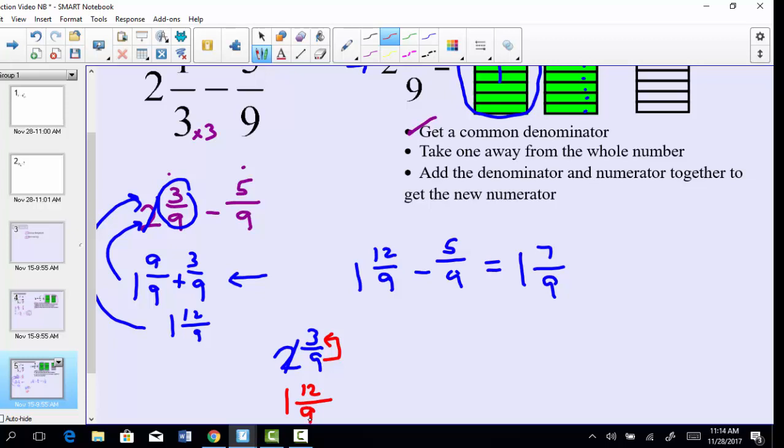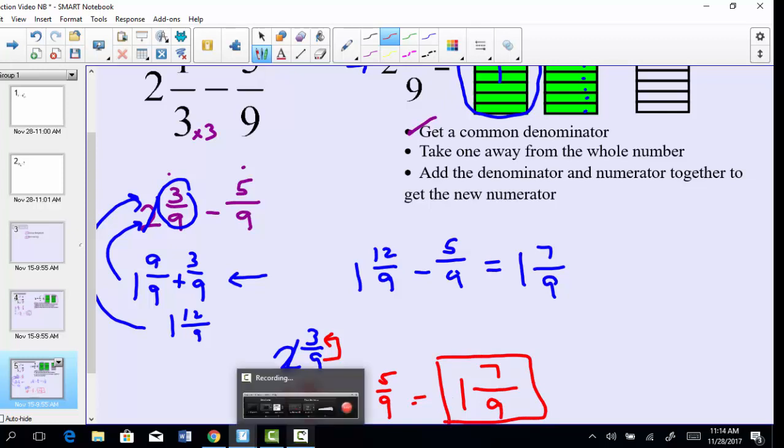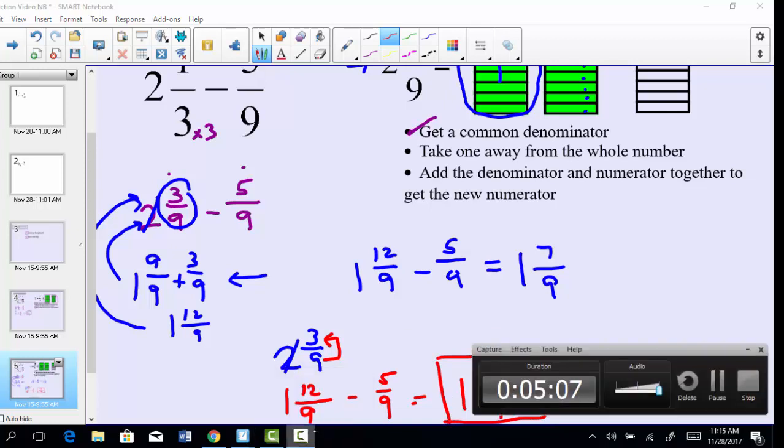So again, you still get 1 and 12/9 in just a shorter way, minus 5/9. 1 minus nothing is 1, 12 minus 5 is 7, and bring my denominator over and I get 1 and 7/9 again. So whichever method you prefer, they all work, they're both good, it's just what you feel is most comfortable.